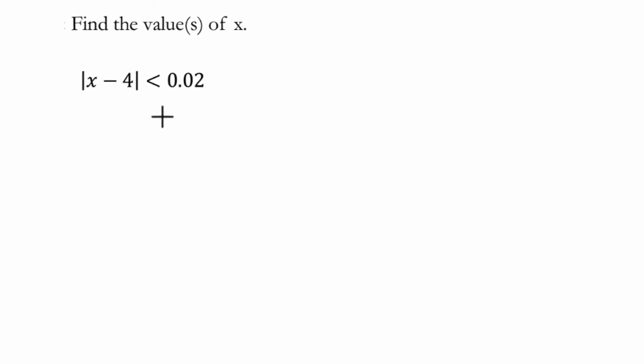Alright, so what does this say? We have the absolute value of something and it's less than 0.02. So the absolute value of something, let's rewrite it as just x for a moment. If it's less than a number, let's say c, this means the distance of this thing from zero.